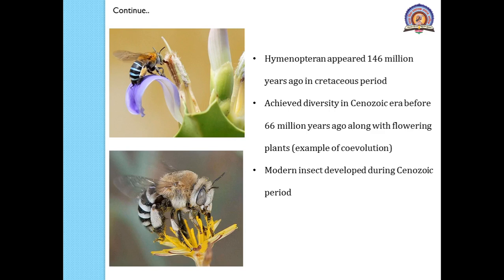Many modern insect genera developed during the Cenozoic period. Insects from this period are often found preserved in perfect condition, so we can easily study such fossils. The body plan and morphology of such specimens can thus be easily compared with that of the modern species of insects which exist today. This concludes the topic of phylogeny of insects.